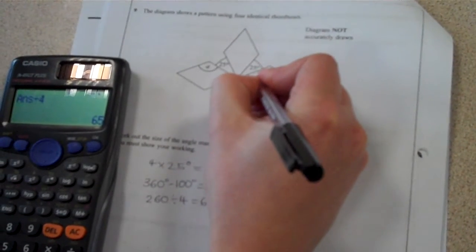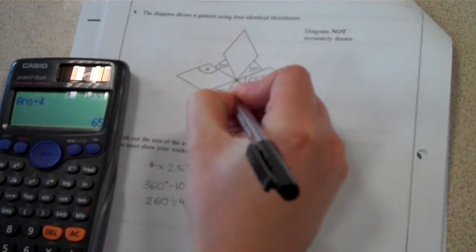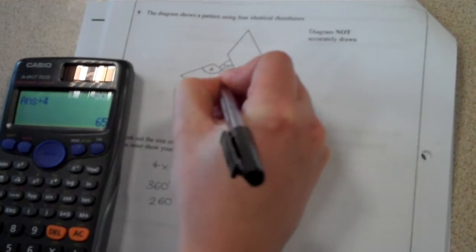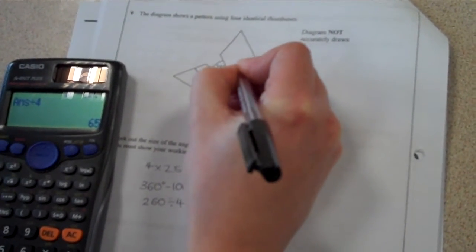I would at this stage then label this onto the diagram because I can then start to build up a picture of what I know and what I still don't know.